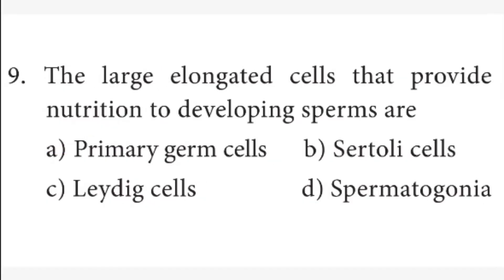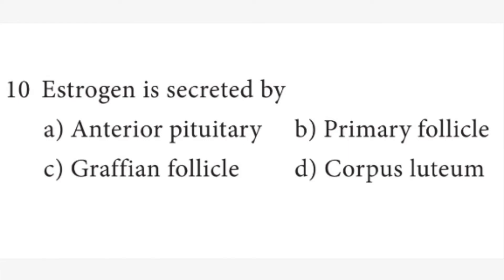Ninth question: the large elongated cells that provide nutrition to developing sperms are? Answer is B option, Sertoli cells. Tenth question: estrogen is secreted by? Answer is C option, Graafian follicle. Estrogen is produced by the Graafian follicle.